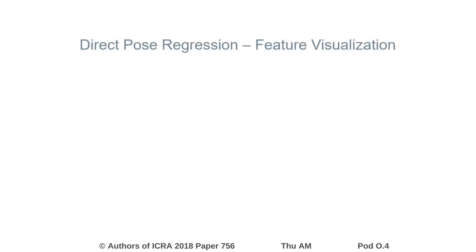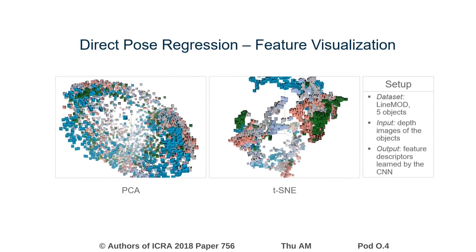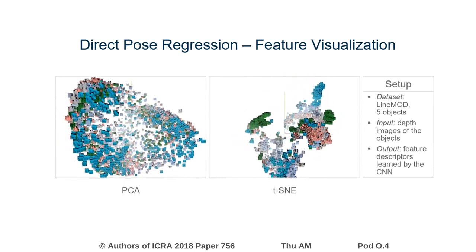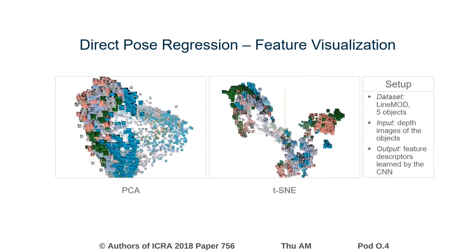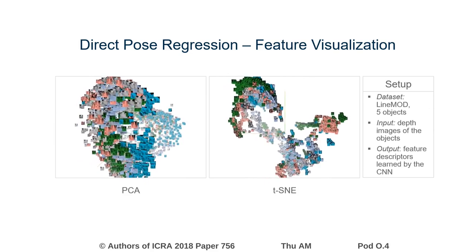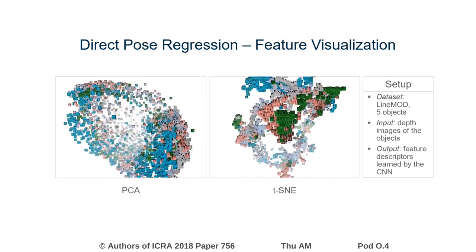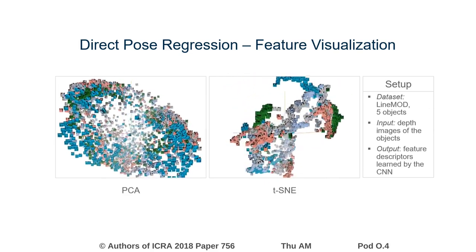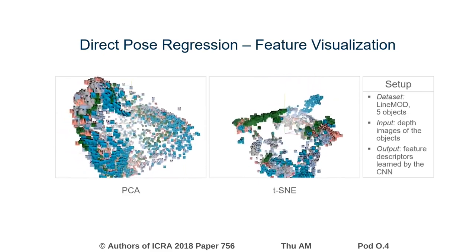Direct regression approaches offer great capabilities but currently lack robustness in pose estimation tasks. The resulting feature descriptors, as you can see, are not discriminative enough to separate objects and poses well in the feature space. This also makes matching approaches on the features unreliable.